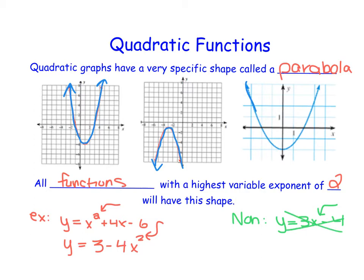We also might see something like y = 4x³ + 7x². Notice that there is an x² here, but it's not the highest variable exponent. We have an x³, and as a result, that will not produce a parabola.